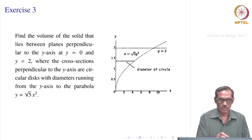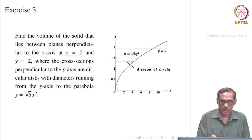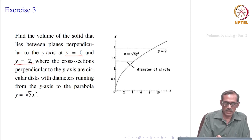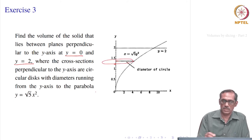Let us take another problem: we want to find the volume of a solid that lies between planes perpendicular to the y-axis. So we may have to express the cross sectional area in terms of y, and the planes are y = 0 and y = 2. So we have the limits for y, which are 0 and 2. The cross sections perpendicular to the y-axis are circular disks — at any point y, that will be the cross sectional area.